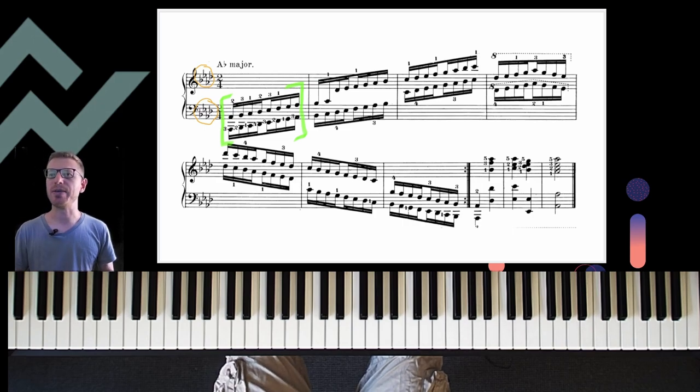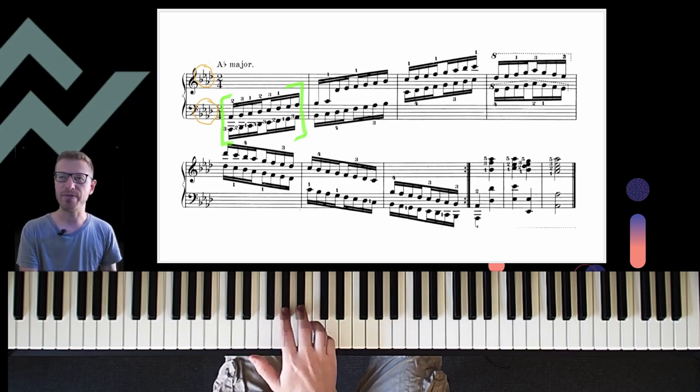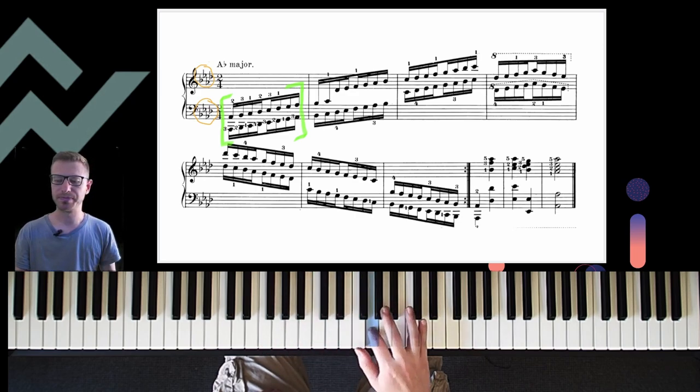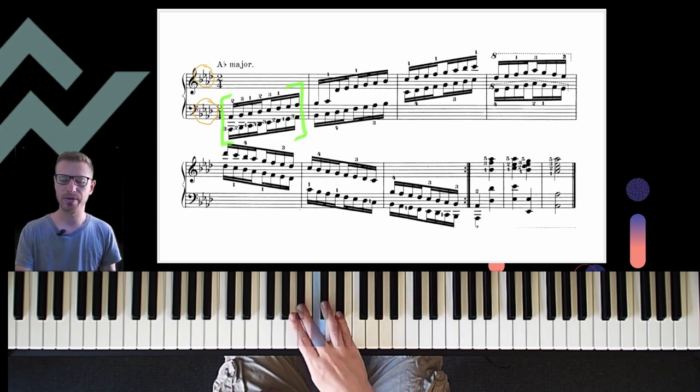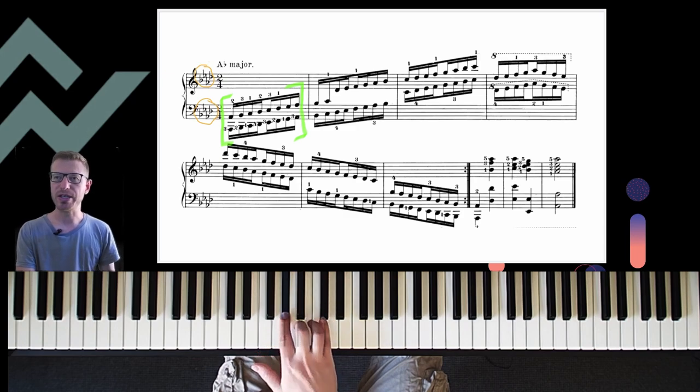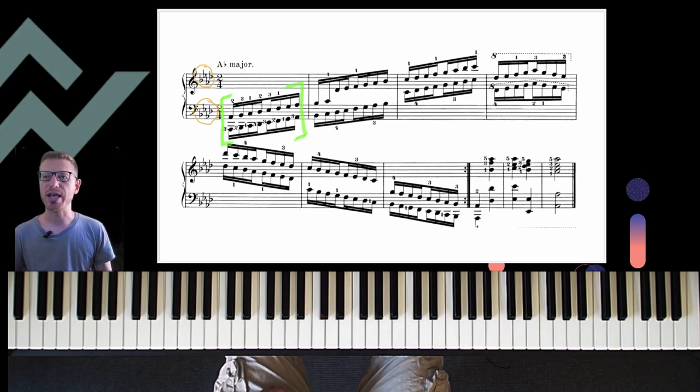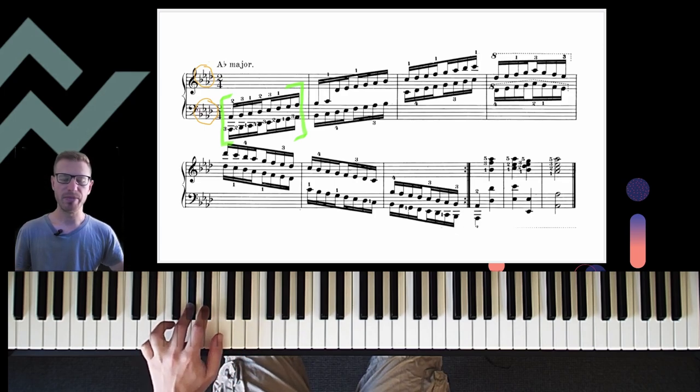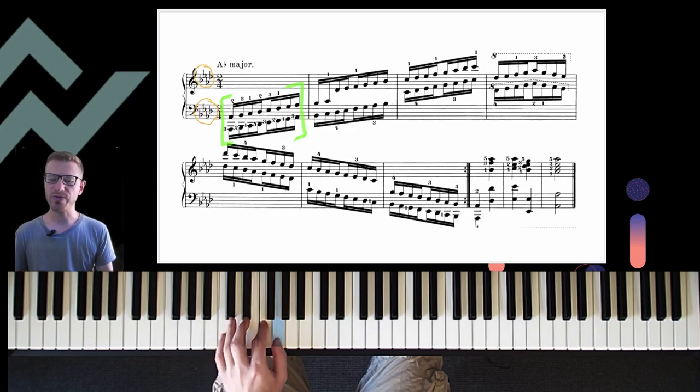First one octave hand separately then together, starting with my right hand, my second finger on A-flat. I'm going to play the following as you can see really easy using two and three on those keys for one octave. For the left hand we're going to start with our third finger on A-flat.